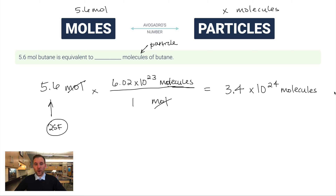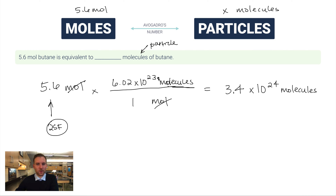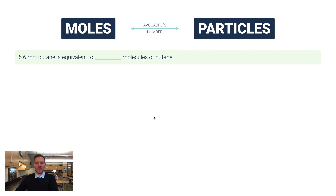We've now gone in both directions — from particles to moles and from moles to particles. The only difference in the process is flipping the fraction. Coming from moles: put one mole on the bottom and 6.02×10²³ particles on top. Coming from particles: put 6.02×10²³ particles on the bottom and one mole on top. Apart from flipping the fraction, the two processes are the same.